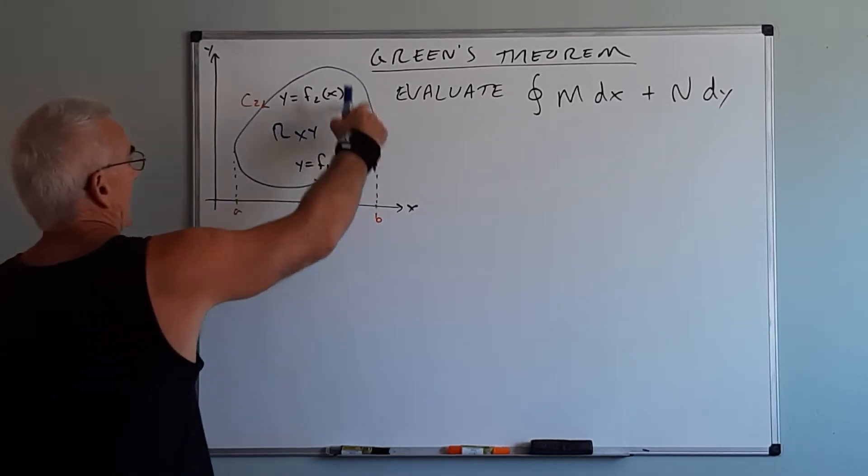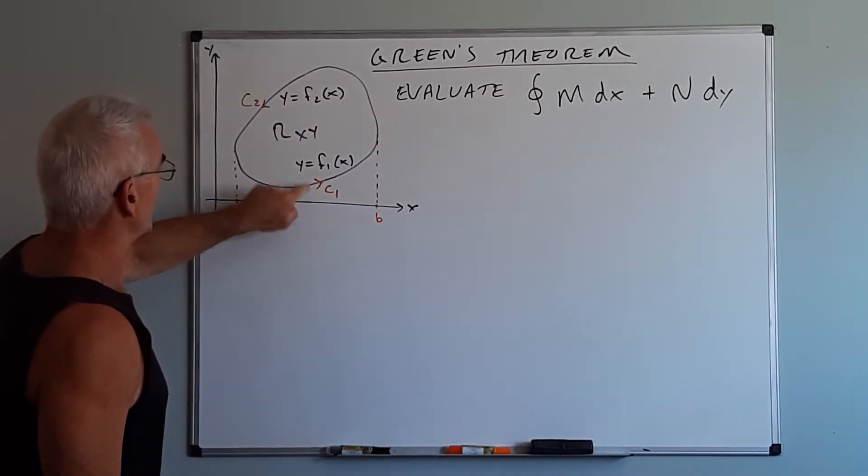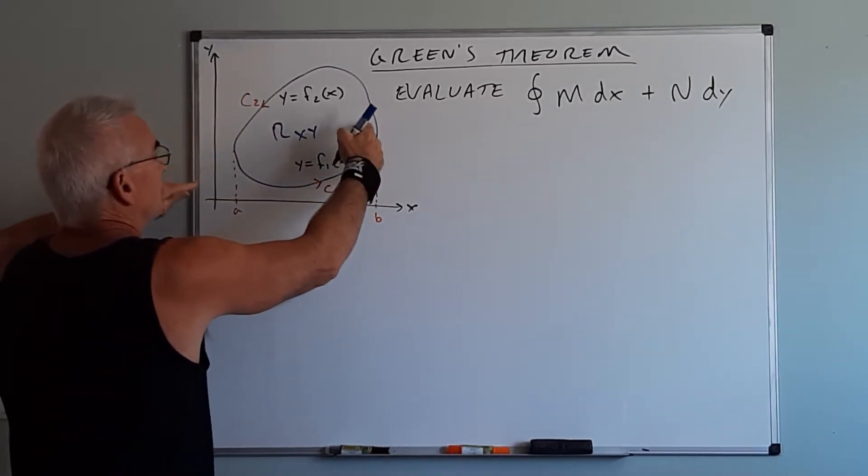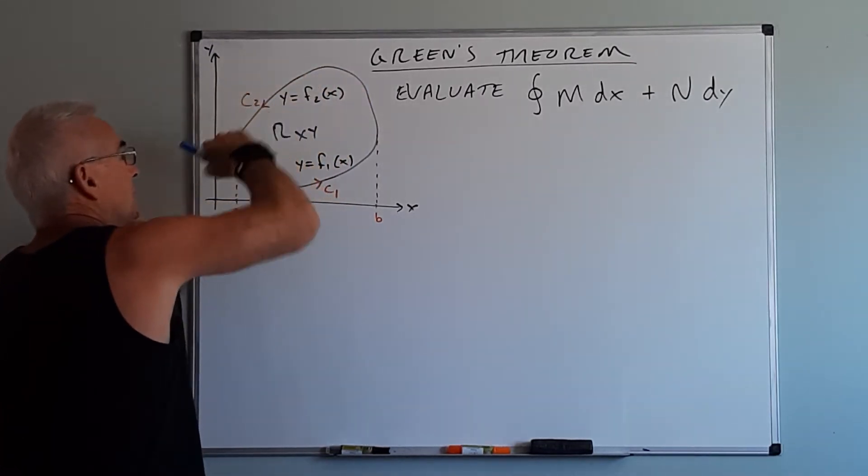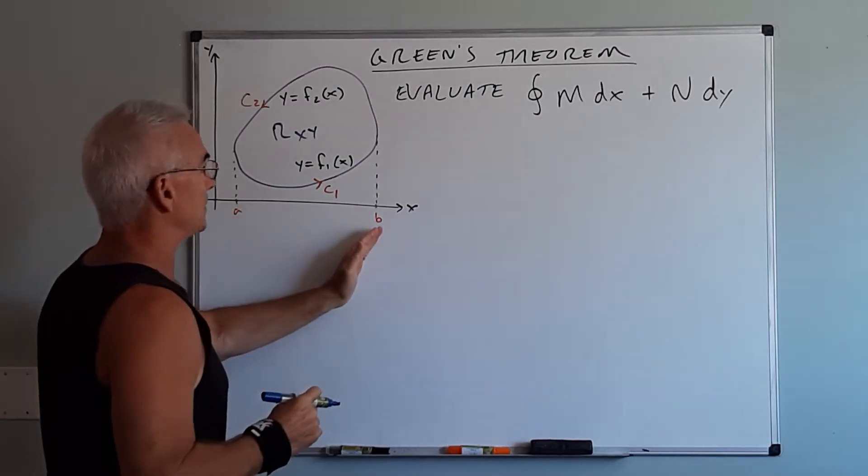So here's our path. I have a closed loop and we're going to say we have two different paths C1 and C2. C1 will be described by y equals f1 of x. C2 will be described by y equals f2 of x going from vertical tangent to vertical tangent, simply from a to b.